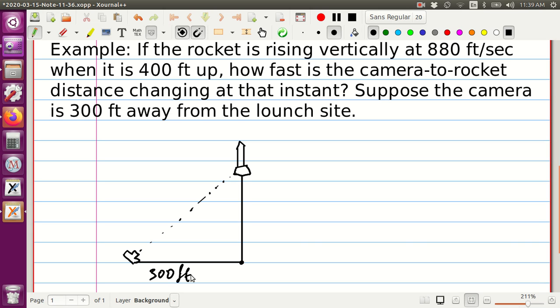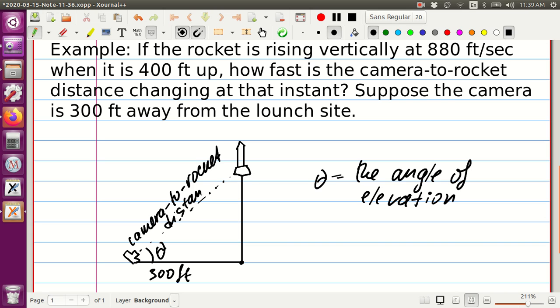Let's create some notation first. This angle over here theta is usually called the angle of elevation. And where is the camera to rocket distance? Camera to rocket distance is over here.